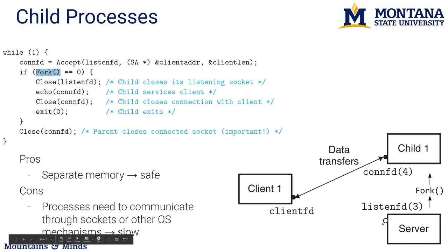After the fork, on the server side, fork does not return zero, so the server can close the connection socket because that will be handled by the child. This weird call results in two different processes — the return value of fork differs on the child versus the server, allowing you to control each one's functionality. The nice thing is that these two processes have completely separate memory spaces. There are all kinds of methods for passing information between processes — chapter 8 of your book covers that more deeply.